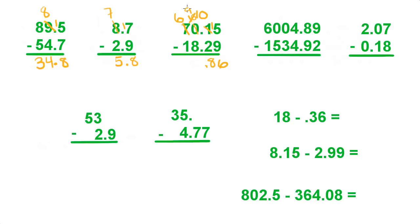Bring down the decimal point. 9 minus 8 is 1. And 6 minus 1 is 5. Over here we have 9 minus 2 is 7. 8 minus 9 — we have to borrow from the 4. Make that a 3, make that 18. 18 minus 9 is 9. Bring down the decimal point.